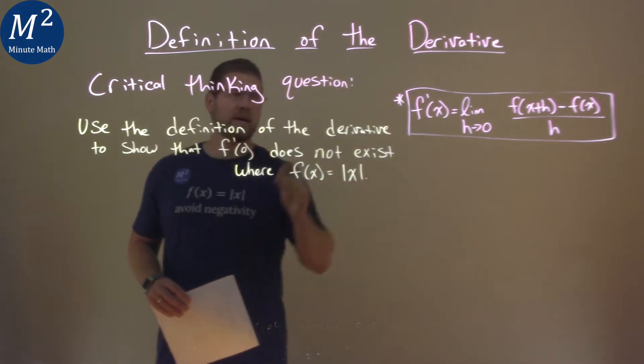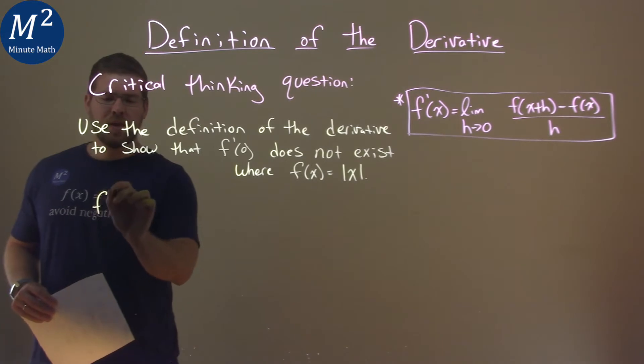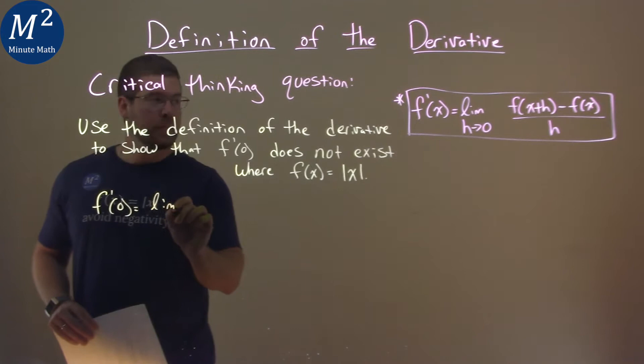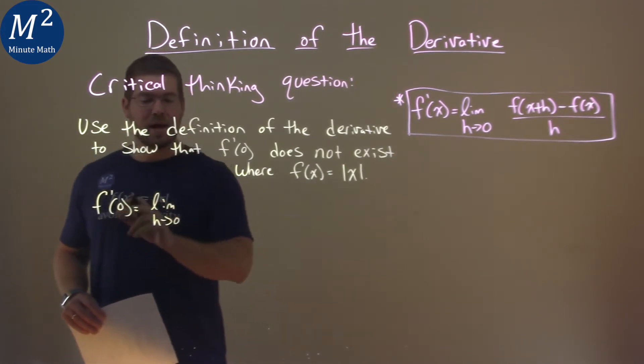So let's use our definition of the derivative, but do it right there at zero. So we're putting zero for x. So we have a limit here as h approaches zero. The h is approaching zero, but x is also zero.